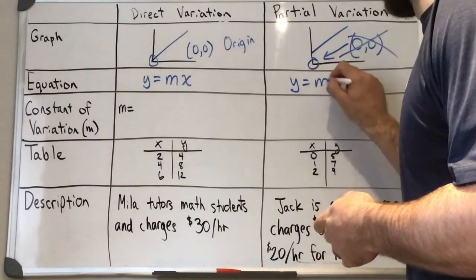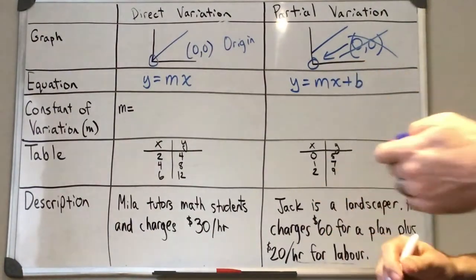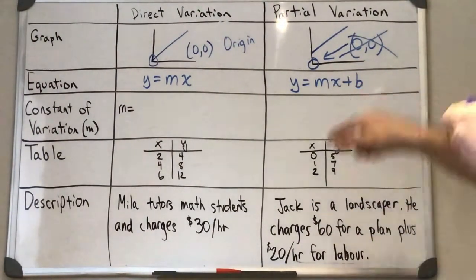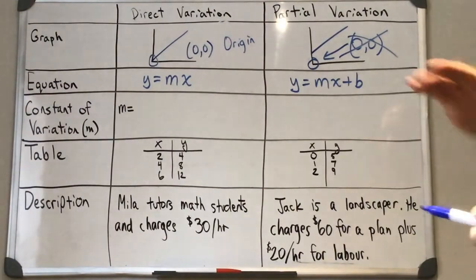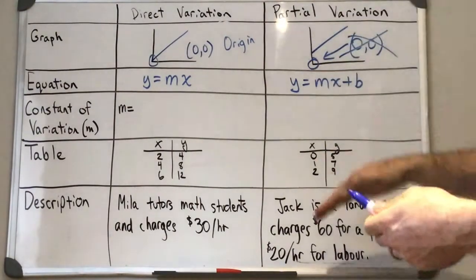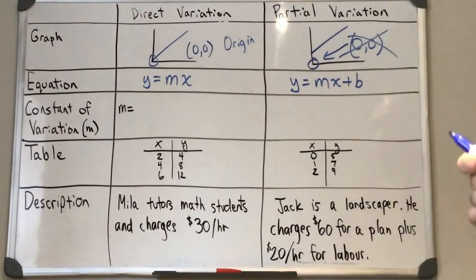For partial variation, this one will be in the form y equals mx plus b. So this b that is added on at the end, what that's going to do is shift our line up or down along the y-axis.